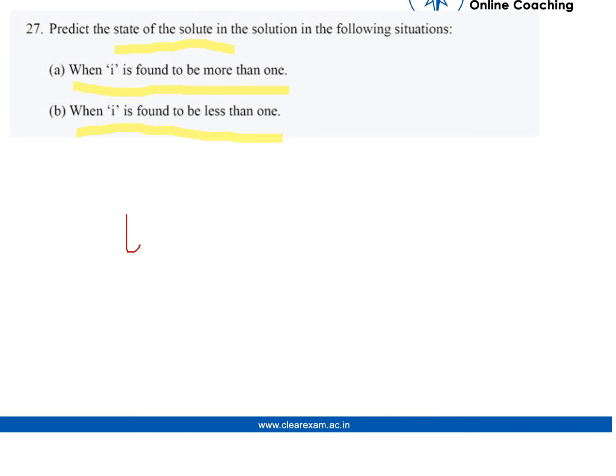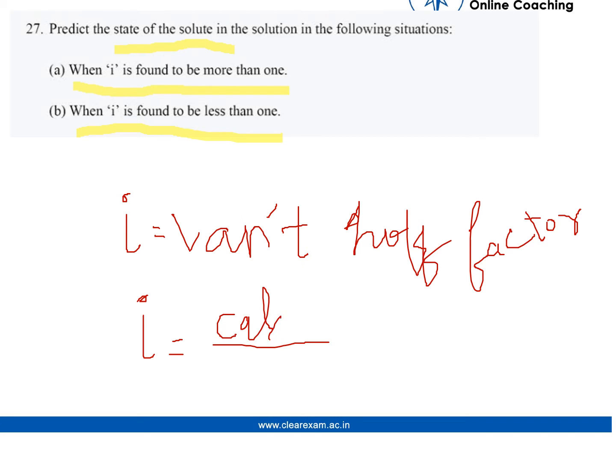Now what is i? i is Van't Hoff factor. So what is the formula for Van't Hoff factor? It is the normal molar mass or the calculated molar mass over the experimented molar mass. So I will write calculated molar mass by observed or experimented molar mass.